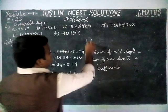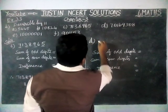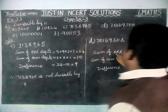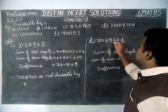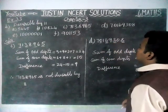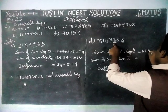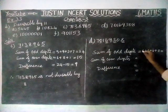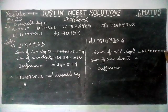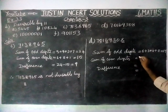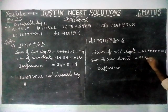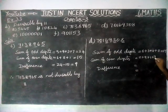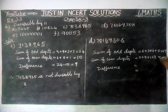Next, Option D. Sum of odd digits: 8 plus 3 plus 6 plus 0 is equal to 17. Next, even digits: 0 plus 9 plus 1 plus 7 is equal to 17.